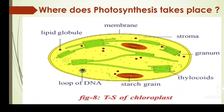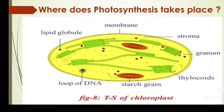Where does photosynthesis take place? Photosynthesis takes place only in plants. Specifically, it takes place in the chloroplast present in the leaves. Chlorophyll, a green color pigment, is inside the chloroplast of the leaf — this is why plants are green. The chloroplast is responsible for many processes that help the plant grow and make its own food. The chloroplast has many labelled parts: membrane, lipid globule, stroma, granum, thylakoids, starch grain, and loop of DNA.